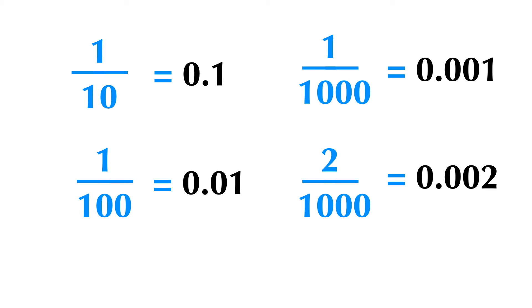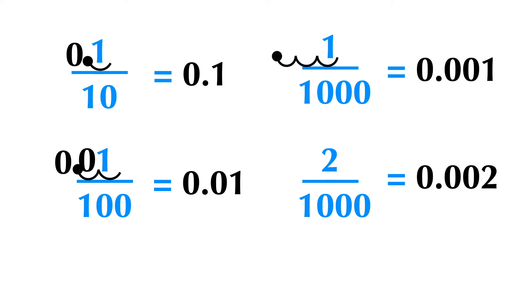Note that any base 10 fraction can be represented as a decimal very easily. The conversion simply involves division. When dividing by 10, 100, 1000, and so on, move the decimal point of the numerator — the top number — to the left as many places as there are zeros.